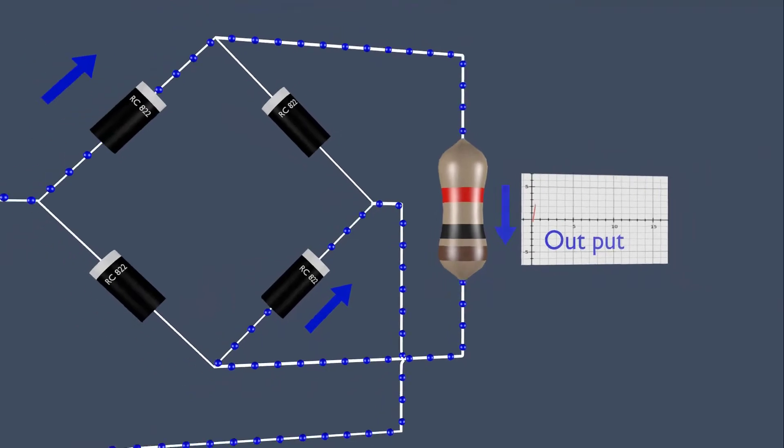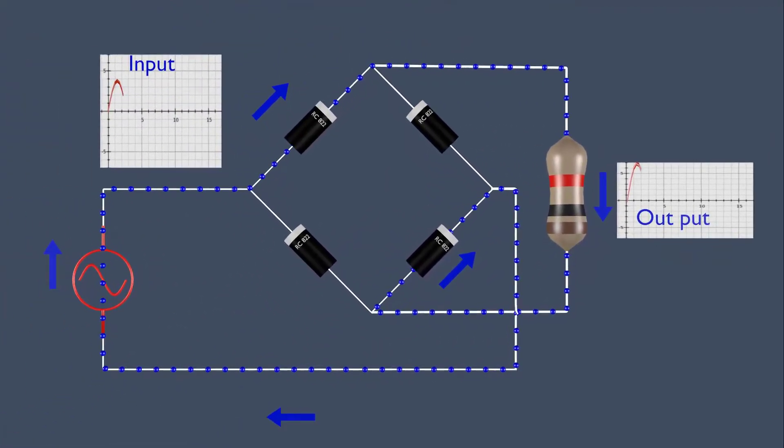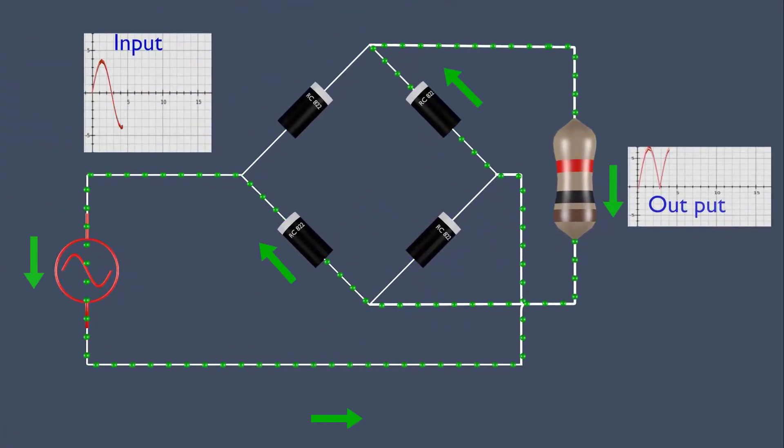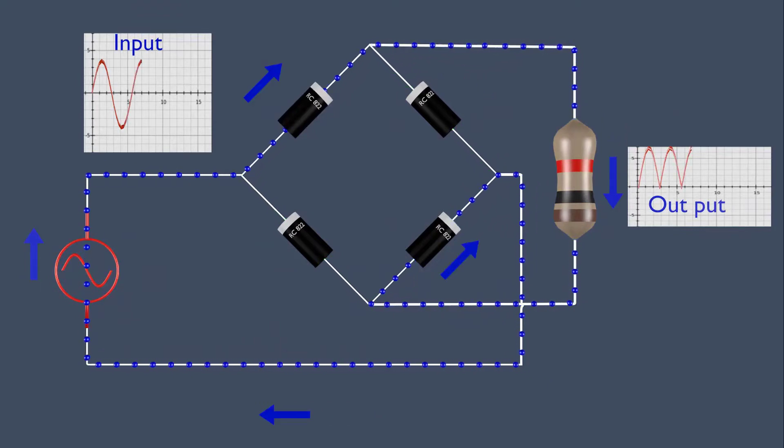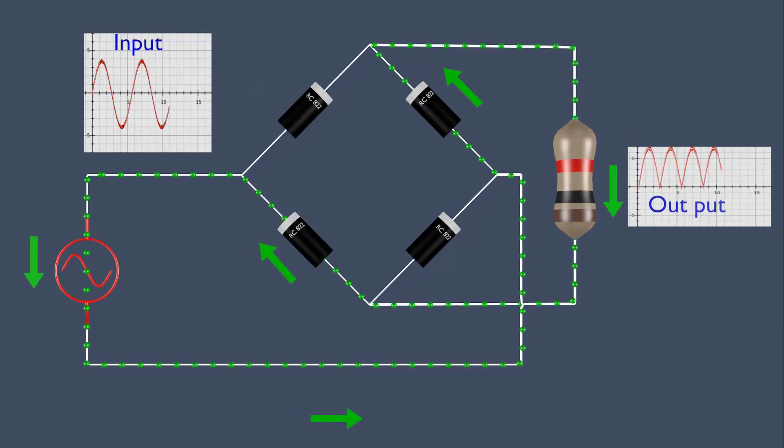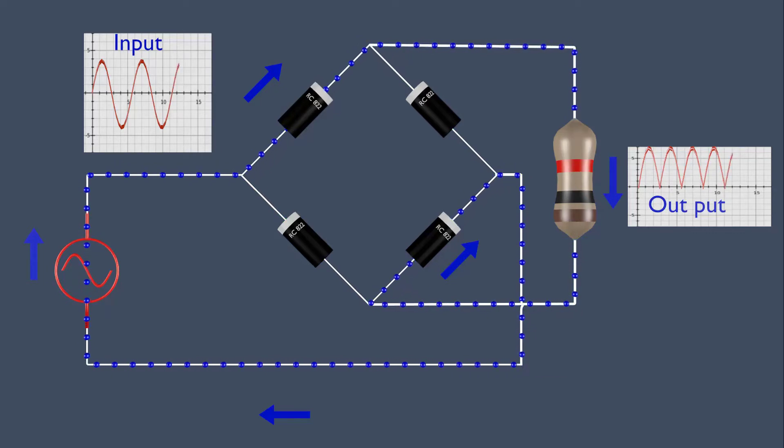In positive half cycle, the current flows through the blue arrow path, and in negative half cycle, the current flows through the green arrow path. In negative cycle, the green arrow diodes are forward biased and remaining are reverse biased. In positive cycle, the blue arrow diodes are forward biased and remaining are reverse biased. Resistor output voltage is full wave.